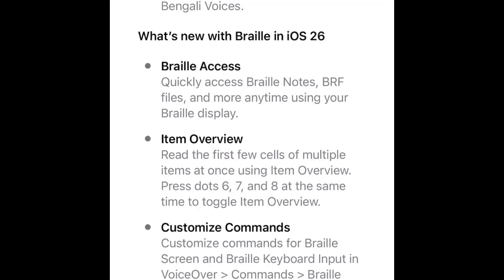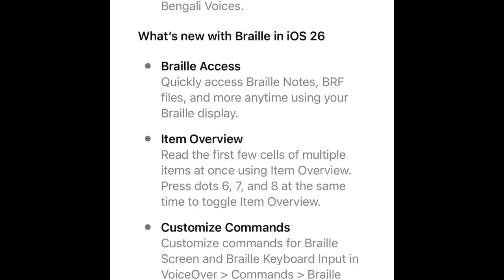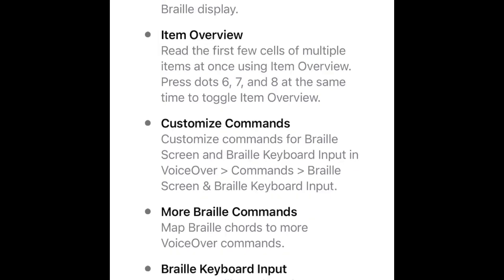Braille keyboard input - turn on Braille keyboard input to use the home row of your keyboard to type in Braille and use Braille commands. Single hand Braille screen input - use Braille screen input in portrait orientation with single hand mode; double tap and fold with three fingers to start single hand mode and type a column of dots at a time.